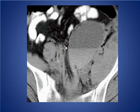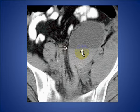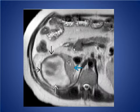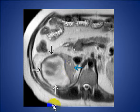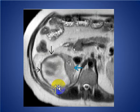Here we see retroperitoneal seroma with a fluid-fluid level due to iliopsoas compartment hematoma in a patient on anticoagulant therapy. On axial T2-weighted MRI, a liquefied hematoma in the right perinephric space converging around the kidney shows low signal intensity in the outer rim and surrounding high signal intensity in the inner region — findings consistent with subacute hematoma.